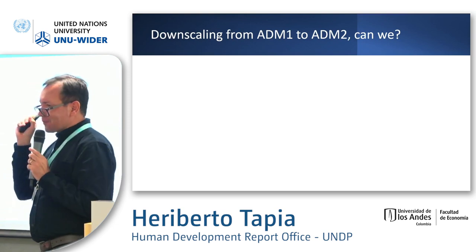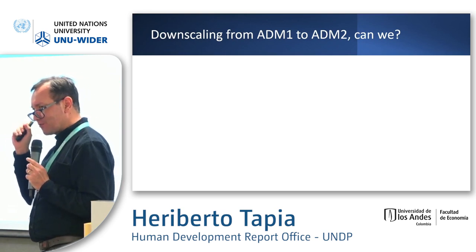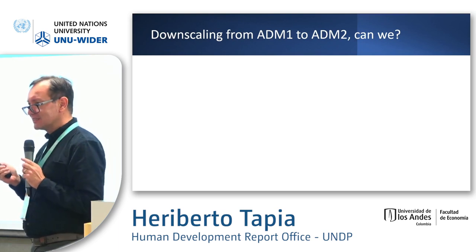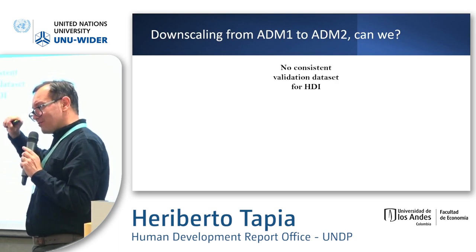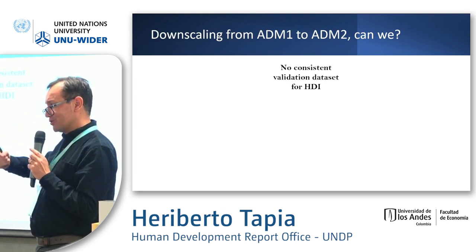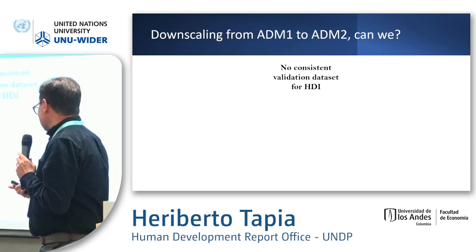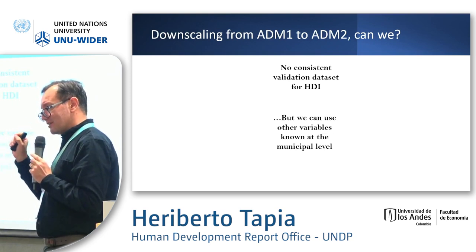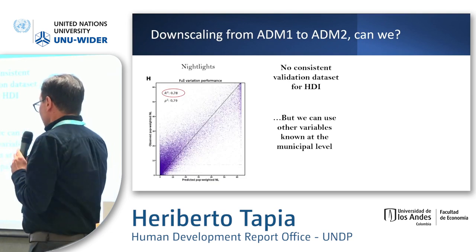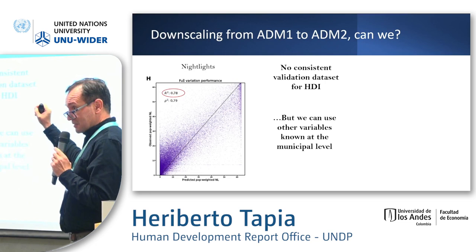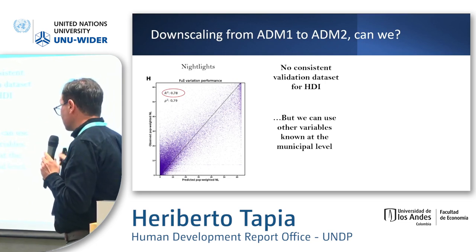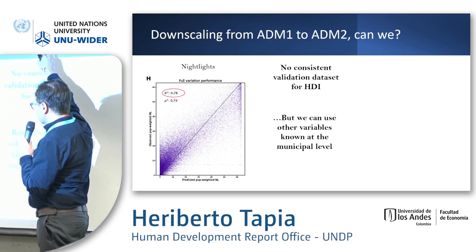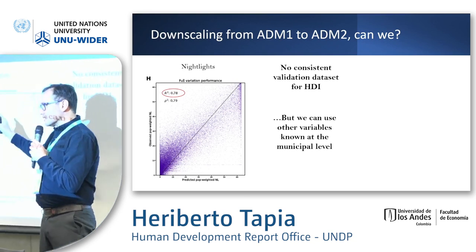Now the question is: can we move to the next level? Can we go from province level to municipality level? The problem is that we don't have HDI information at the municipality level to test validity. However, we do have other variables with known municipal-level values. One of them is nighttime lights, which has been used as a proxy for development. When we do this exercise jumping from province level to municipal level, the fit is very good at 78 percent.